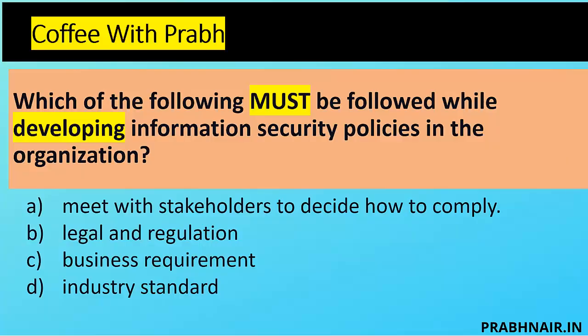First coffee shot: which of the following must be followed first? The keyword is 'must' - it's mandatory, we don't have an option to customize. 'Developing' is present tense - they have not developed yet, they are in the process of developing the information security policy. There are three keywords: must (mandatory), developing (present tense), and policy. When talking about policy, we always follow the top-down approach.